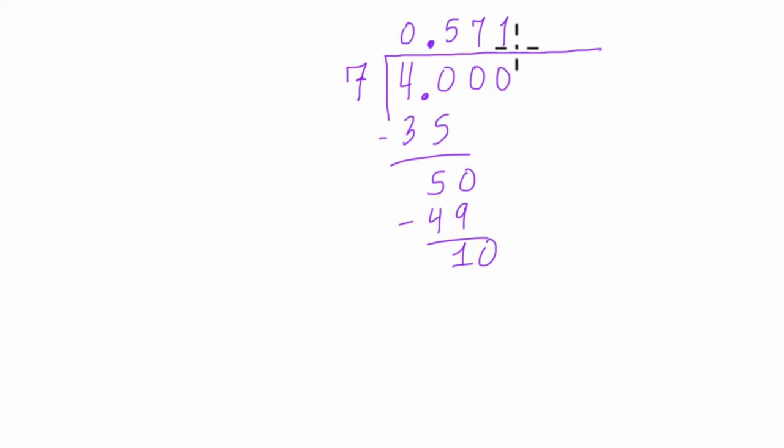7 goes into 10 one time. 7 times 1 is 7. Now 10 minus 7, that's just 3. Bring our 0 down. 7 goes into 30 four times. 7 times 4 is 28. 30 minus 28 is 2.